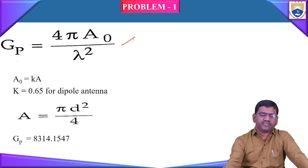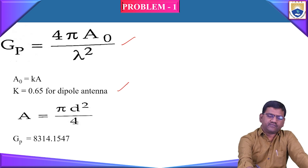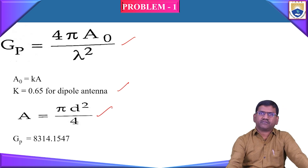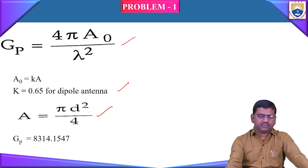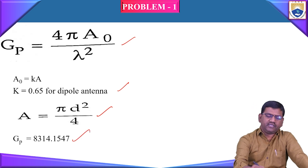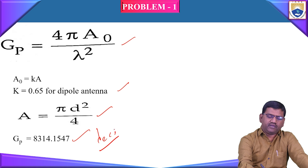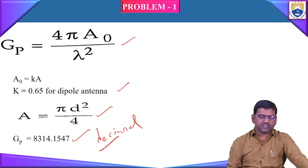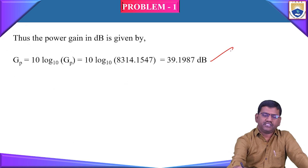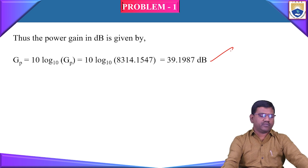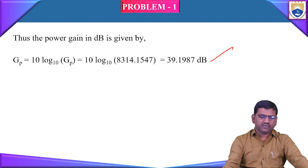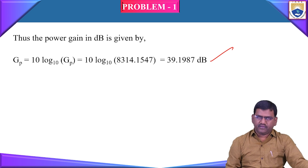Similarly, the dB value is obtained using 10 log(8314.147) = 39.19 dB. Now we are going to do another problem based upon the paraboloid antenna.